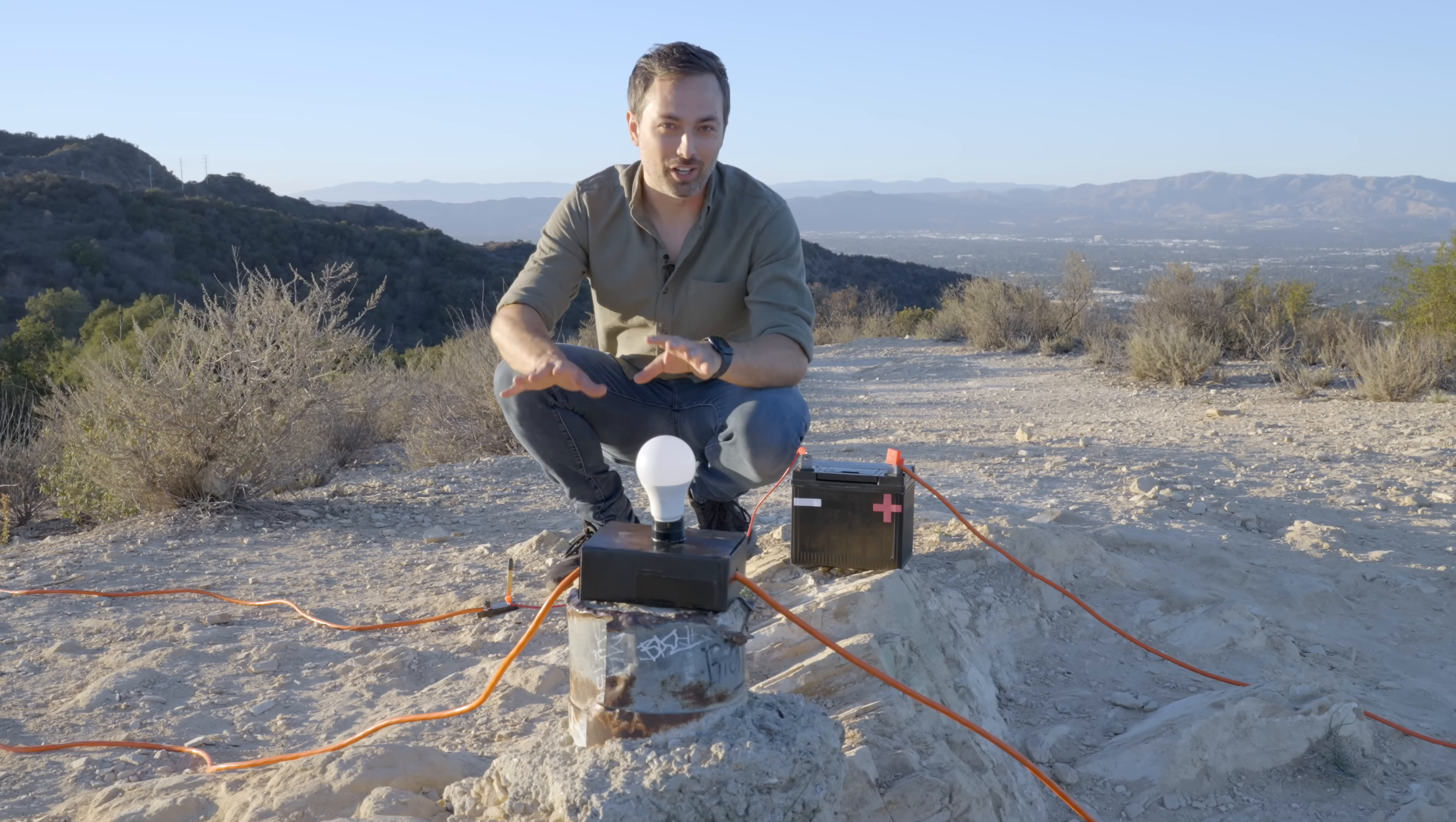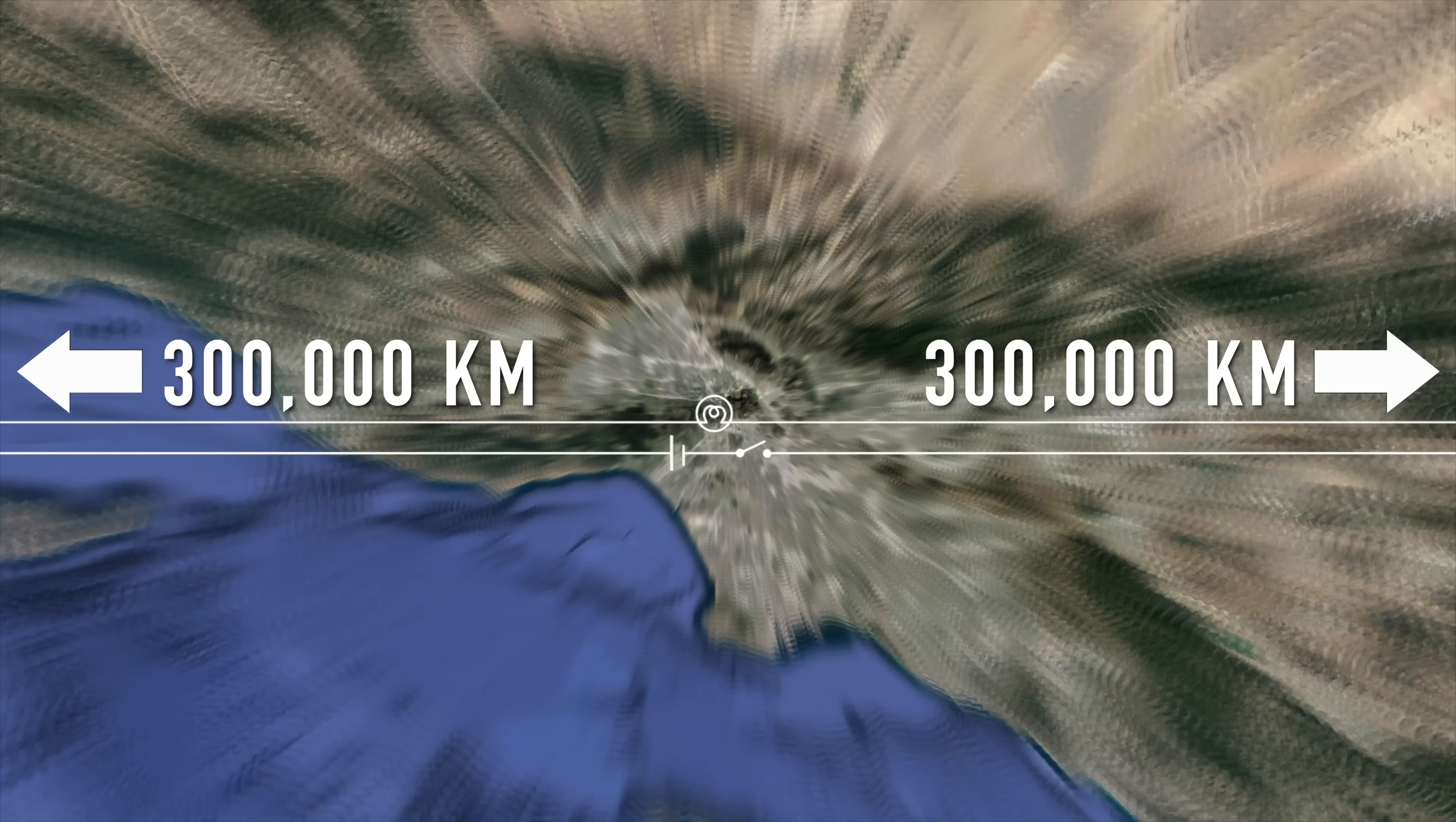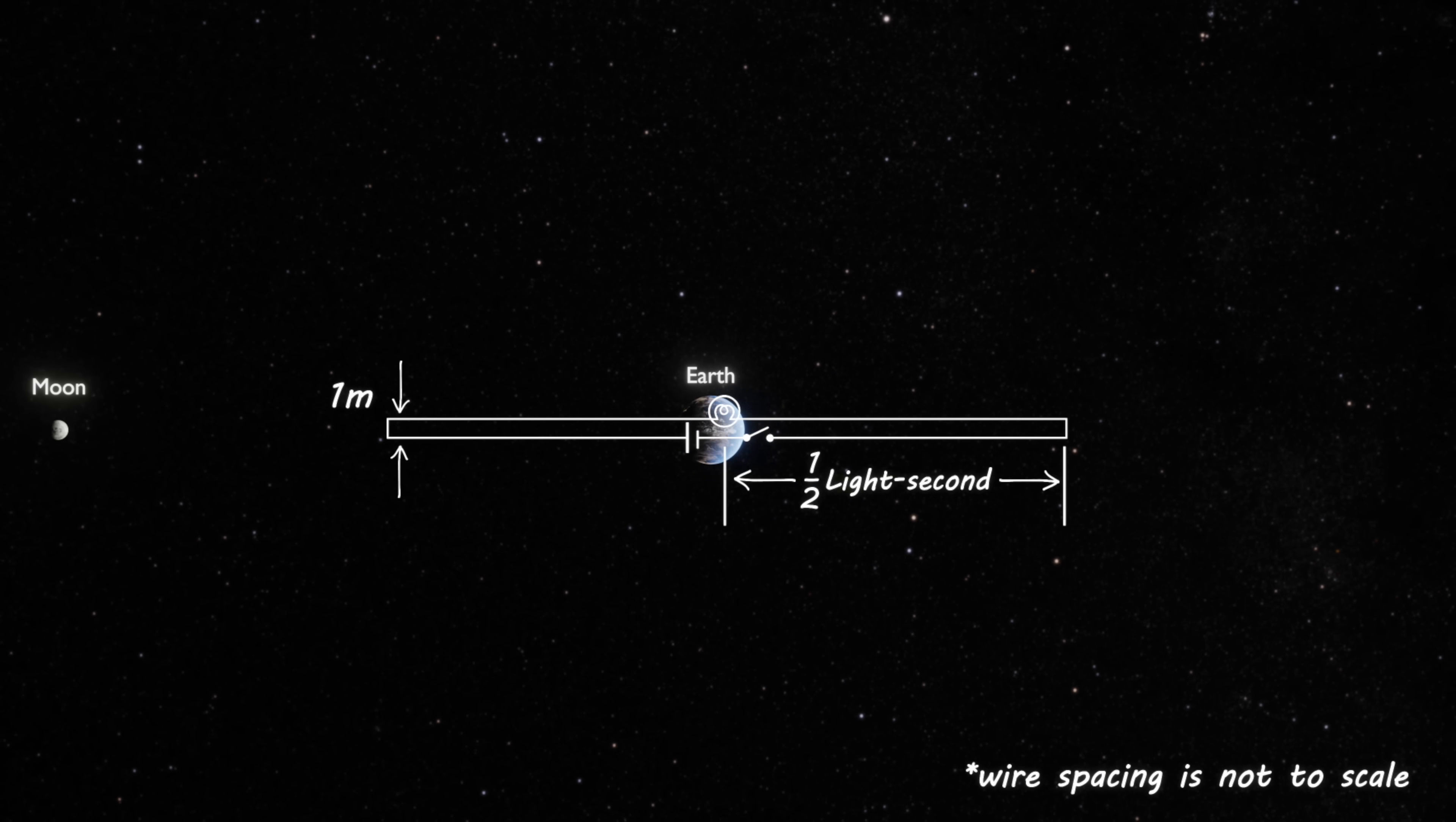Imagine you have a giant circuit consisting of a battery, a switch, a light bulb, and two wires which are each 300,000 kilometers long. That is the distance light travels in one second. So they would reach out halfway to the moon and then come back to be connected to the light bulb which is one meter away.